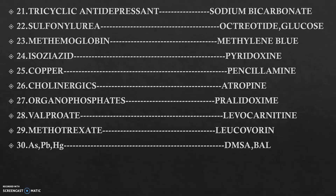In case of sulfonylurea, it will be octreotide and glucose. For methemoglobin poisoning, it is methylene blue. For isoniazid, it is pyridoxine. For copper, it is penicillamine — which is a common OTC-type drug. And for cholinergic poisoning, we use atropine.